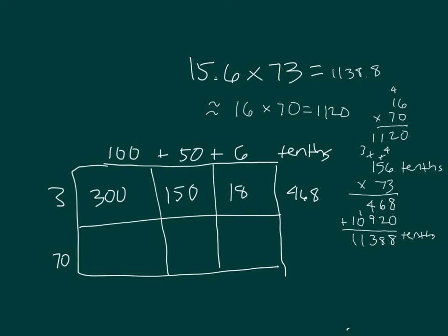70 times 100 is 7,000. 70 times 50 is 3,500. And 70 times 6 is 420. When I add those together, I get 10,920.